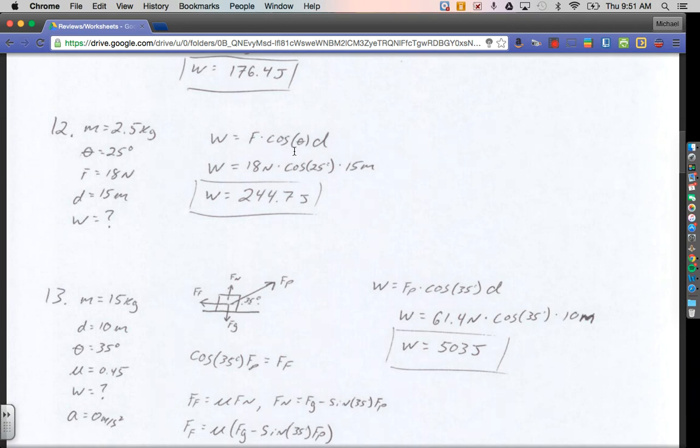Work equals force times cosine theta d. The force that the kid pulls is 18 newtons. The angle between the force and the direction of its movement is 25 degrees, so cosine 25. And the distance is 15 meters. Plug all that into your calculator, and you find out that you've done 244.7 joules of work.